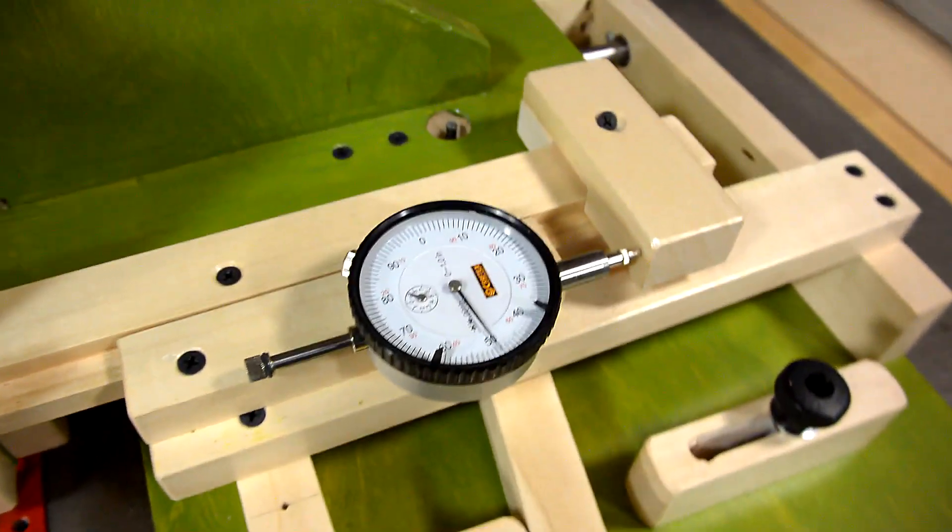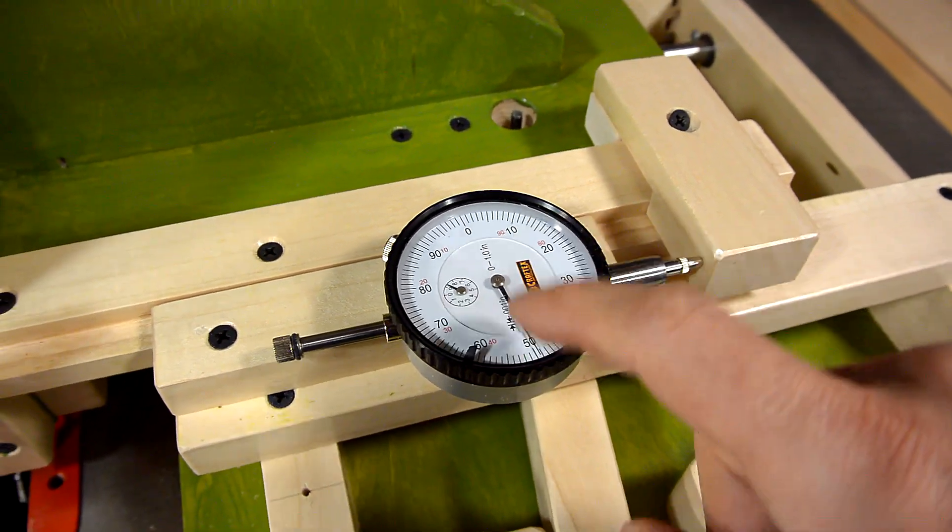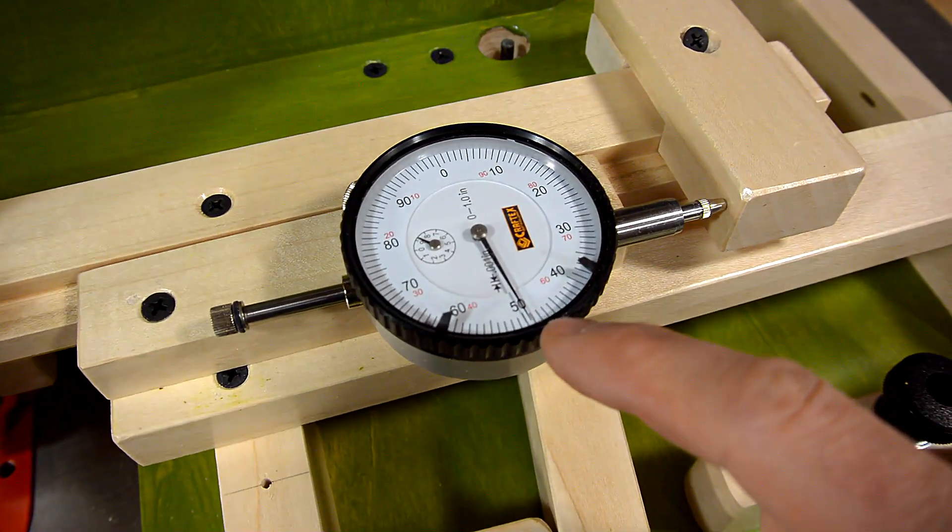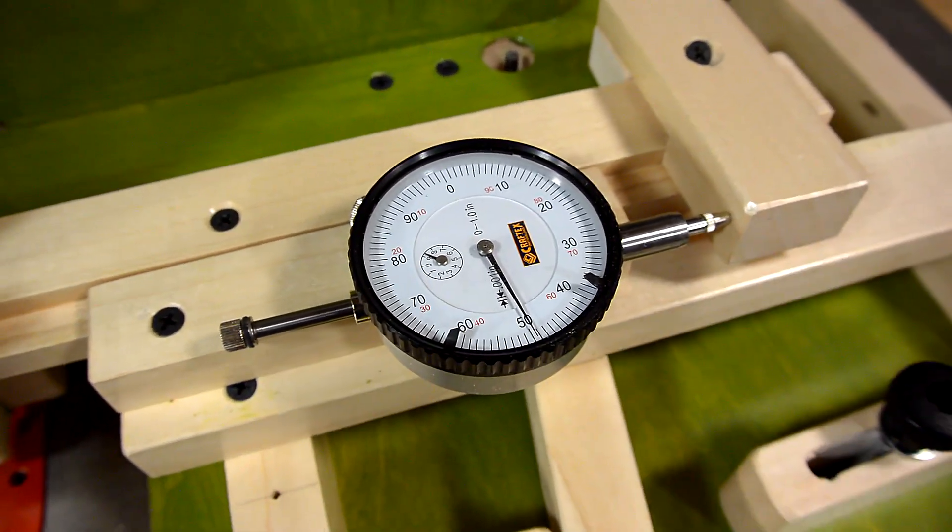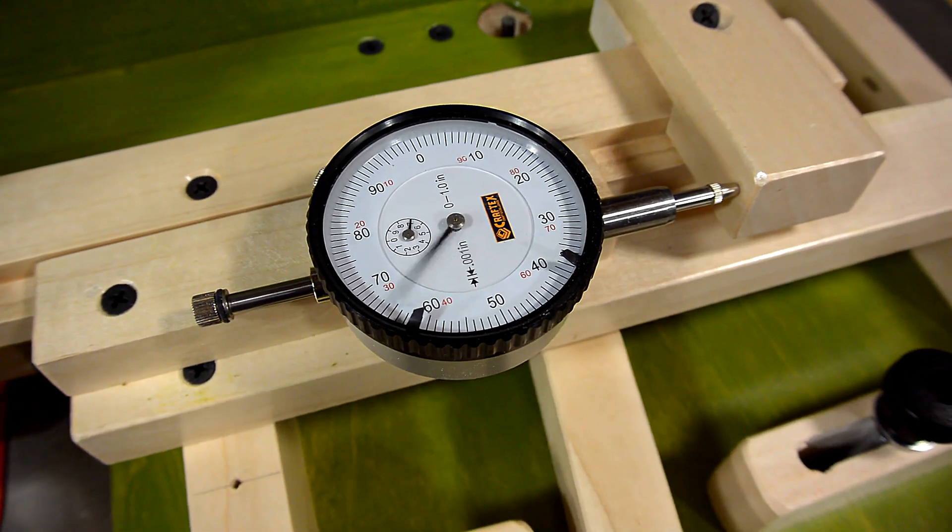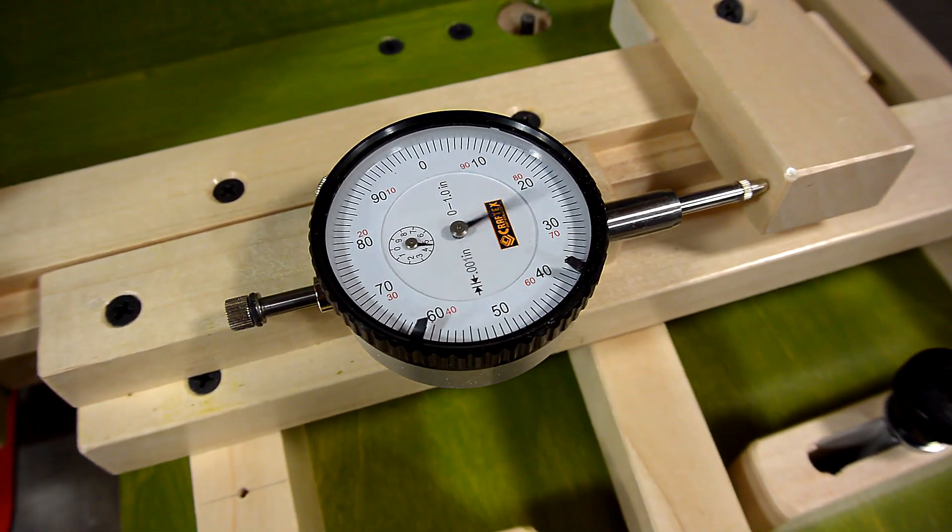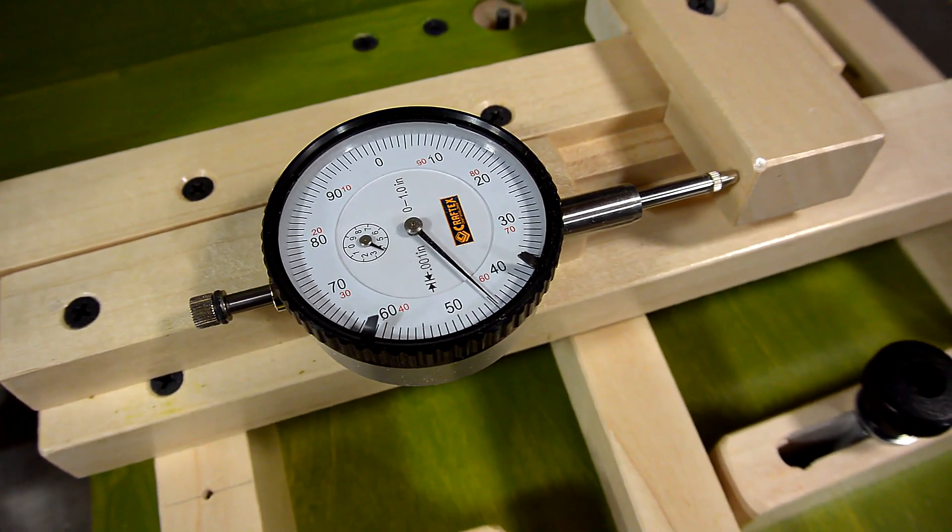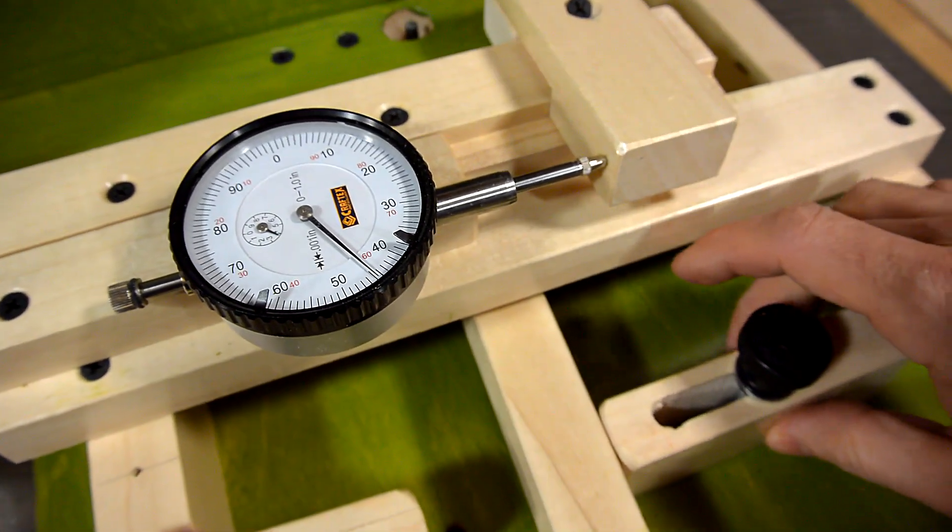And that tenon needs to be 404 thou wide, plus I need to add 100 thou for the blade. So now I need to go 5 turns on here, plus 4 thou. 1, 2, 3, 4, 5, and a bit. Right about there. And lock that in.